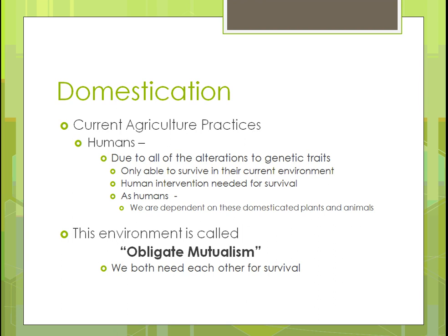Domestication in agricultural practice is due to all the alterations in genetic traits — essentially, can the organism survive in the environment it's in? What we've become is that these animals need humans to survive, and we're dependent on certain plants and animals. When you have that relationship, it's called obligate mutualism — you need each other in order to survive, and we couldn't maintain current practices without both.